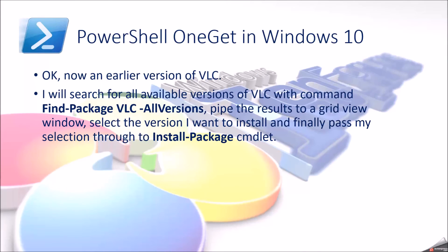Now let's install an earlier version of VLC. I will search for all available versions of VLC with the command Find-Package vlc -AllVersions, pipe the results to a grid view window, select the version I want to install, and finally pass my selection through to the Install-Package commandlet.